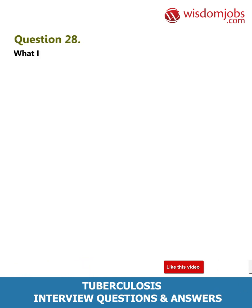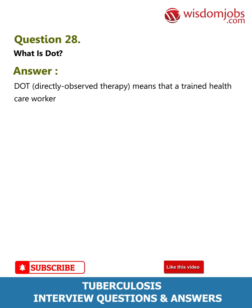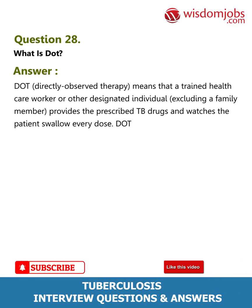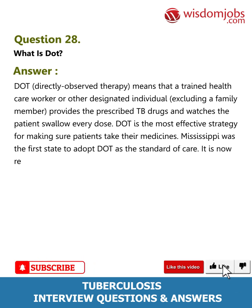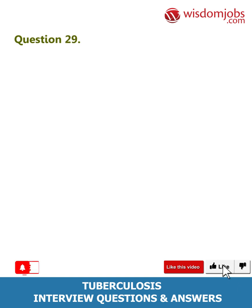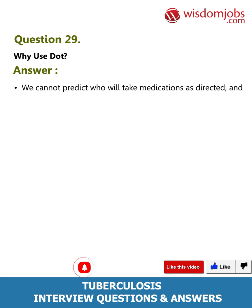Question 28: What is DOT? Answer: DOT — directly observed therapy — means that a trained health care worker or other designated individual, excluding a family member, provides the prescribed TB drugs and watches the patient swallow every dose. DOT is the most effective strategy for making sure patients take their medicines. Mississippi was the first state to adopt DOT as the standard of care. It is now recommended by the Centers for Disease Control and the World Health Organization as the standard for treating TB.